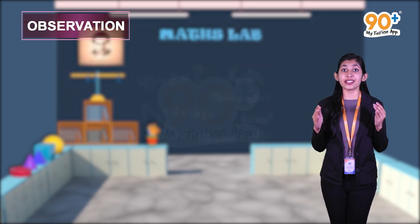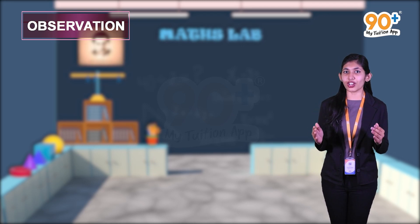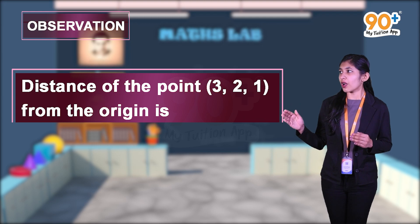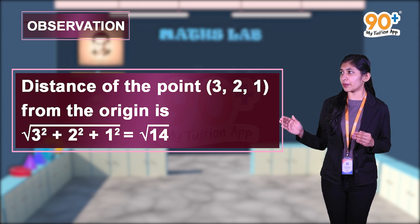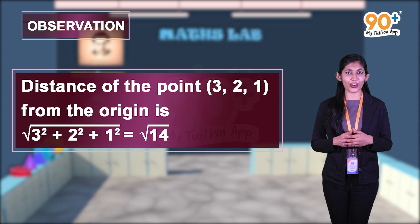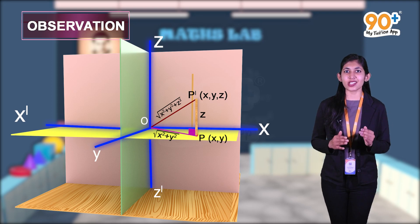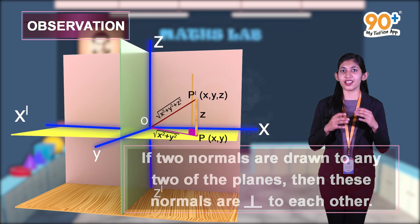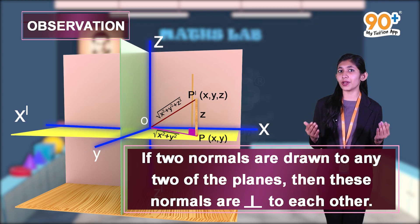Similarly, we got the distance from origin O to point P-dash (x, y, z) as the square root of x squared plus y squared plus z squared. Therefore, the distance of the point (3, 2, 1) from the origin is the square root of 3 squared plus 2 squared plus 1 squared, which equals root 14. The rod fixed on the xy-plane is normal to it. If we fix a wire perpendicular to any of the planes, it will represent the normal to the plane. If two normals are drawn to any two of the planes, then these two normals are perpendicular to each other.